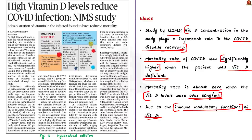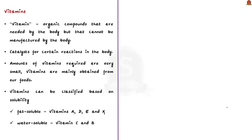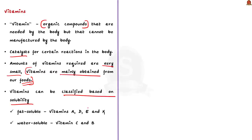In this context, let us look into vitamins and vitamin D. Vitamins are organic compounds needed by the body that cannot be manufactured by the body — they mainly serve as catalysts for certain reactions. The amounts required are very small and are mainly obtained from our foods. Vitamins are classified based on solubility: fat-soluble or water-soluble. Vitamins A, D, E and K are fat-soluble, whereas vitamins C and B are water-soluble.